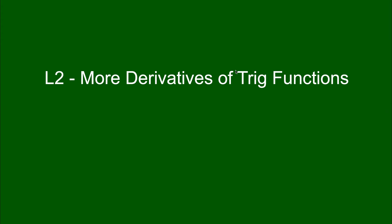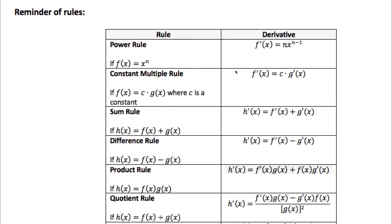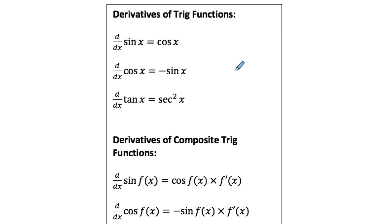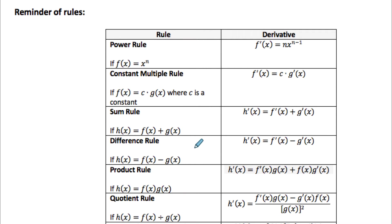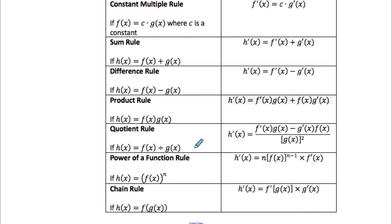This is our second lesson on derivatives of trig functions. Now that we know the derivative of sine is cosine, the derivative of cosine is negative sine, and the derivative of tan is secant squared, we're going to find the derivative of more complicated functions where we'll also need to use other derivative rules learned earlier in the course — product rule, quotient rule, and chain rule.